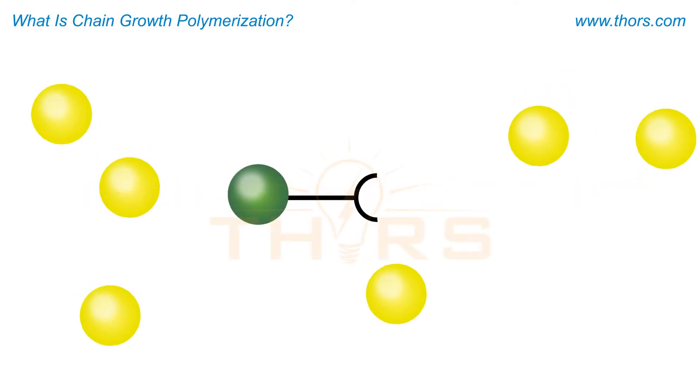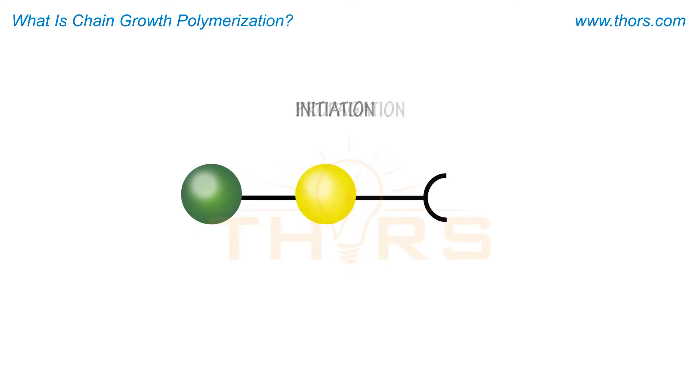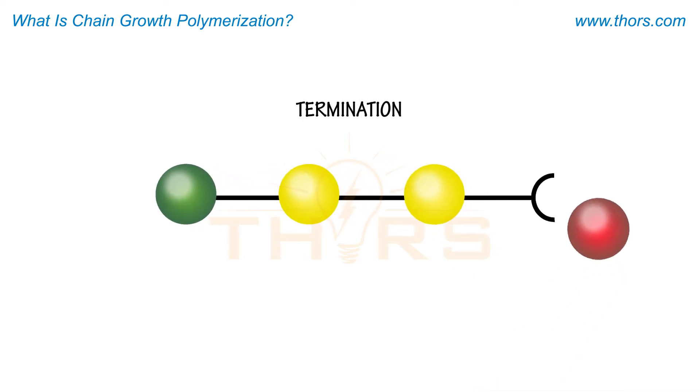During chain growth polymerization, the three stages of polymerization—initiation, propagation, and termination—occur to produce a new polymer chain.